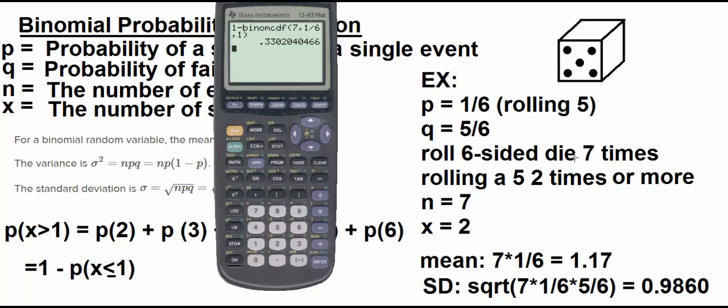Our x value is now actually 1 and not 2. Because binomcdf in the calculator always does less than and equal to. So if you want more than, you have to adjust your x accordingly. And that is what I find my students struggling with the most, is making adjustments for x when you're talking about less than or greater than.